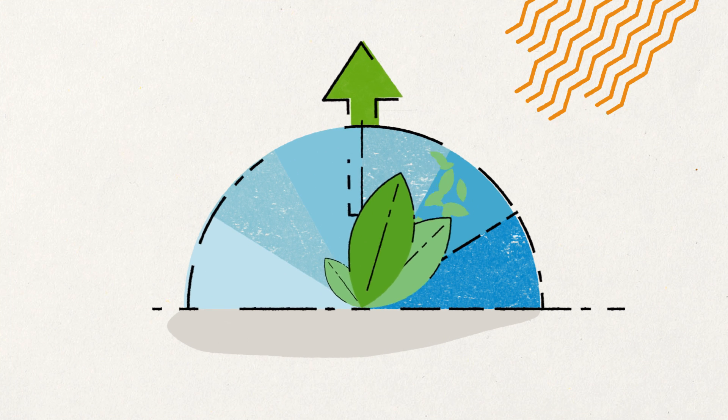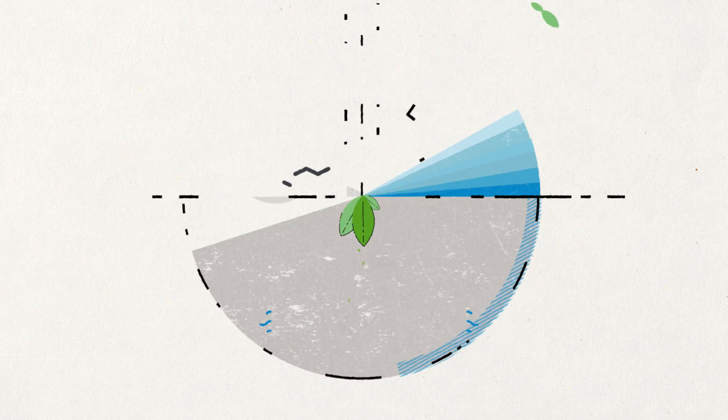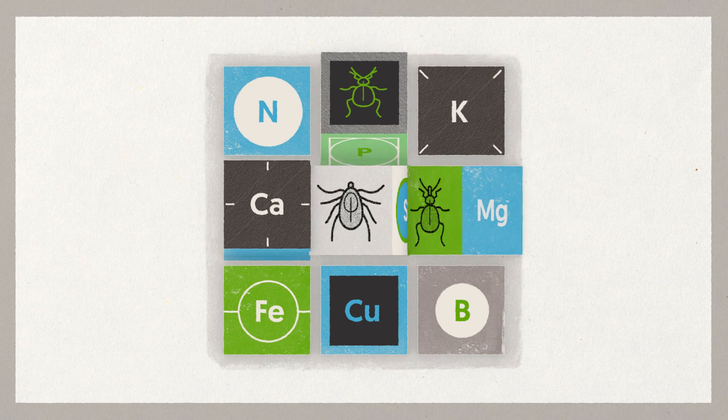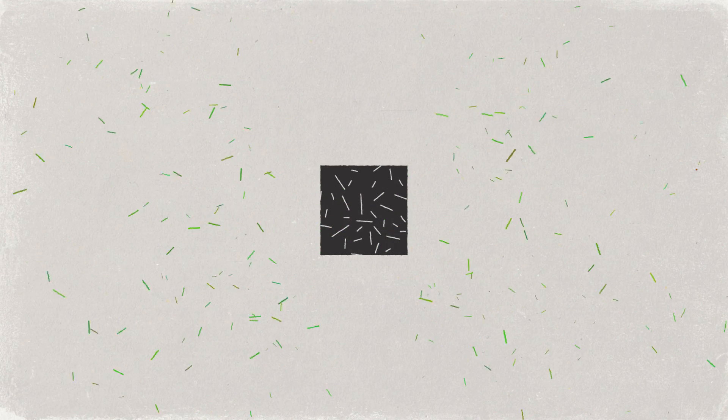Natural selection tends to favour plants that can compete for light, water and nutrients, defend themselves from being eaten, and disperse their seed over long distances.